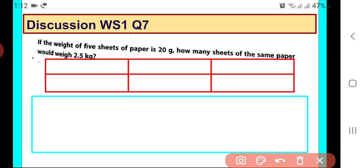So here we are given 5 sheets of paper and they weigh 20 grams. What are the two quantities which we need to compare? Number of sheets and their weight in grams. And it is asked how many sheets of the same paper would weigh 2.5 kilograms?